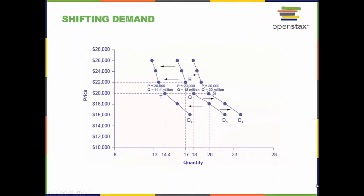Increased demand means that at every given price, the quantity demanded is higher, so that the demand curve shifts to the right, from D0 to D1.